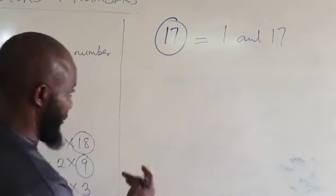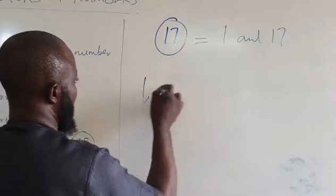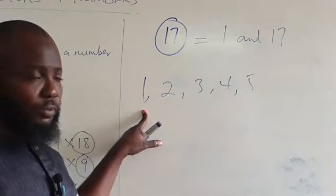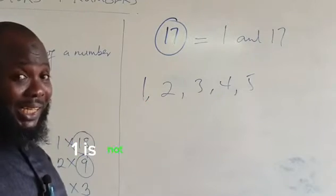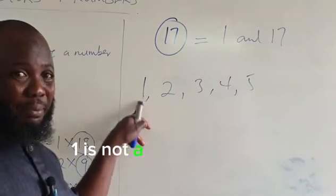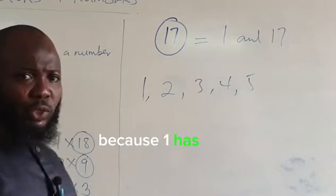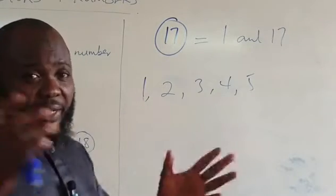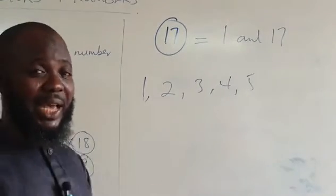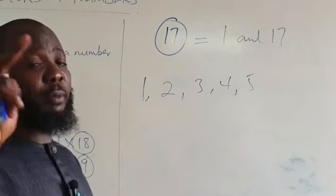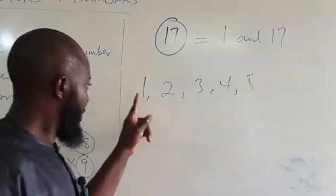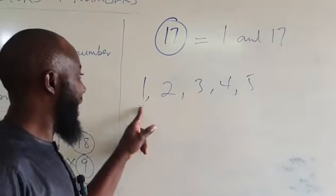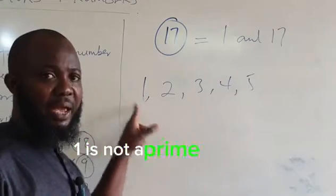Let's check from the beginning. Is 1 a prime number? No. 1 is not a prime number because it has only one factor, which is 1 itself. For a number to be prime, it must have exactly two factors. Since 1 has just one factor, it is not a prime number.